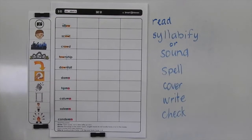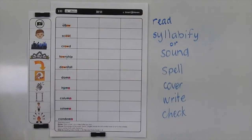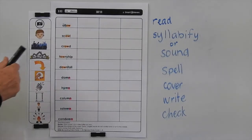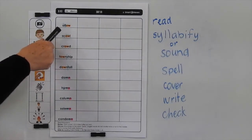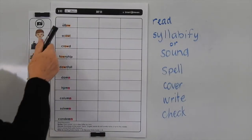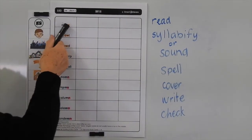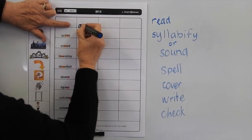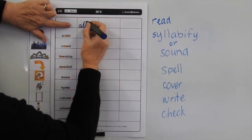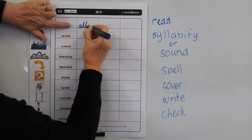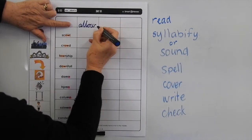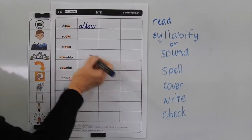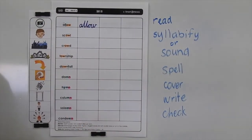Okay, let's read the words, spell them, and write them and check them. You're going to write in running writing. You've got 'allow' — you'll have to break it into syllables because it's got more than one syllable: A, double L, O, W. Cover it with your finger or a bit of paper and write the word in. You'll have to finish the other rows and columns by writing in all those words into each of the gaps.